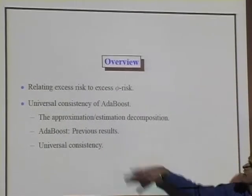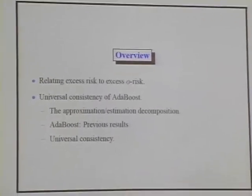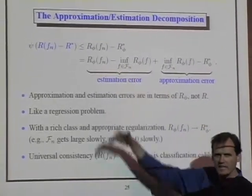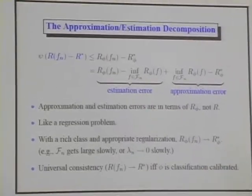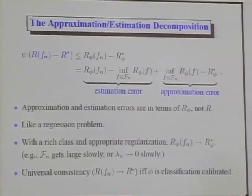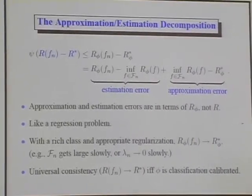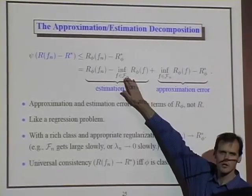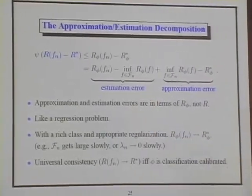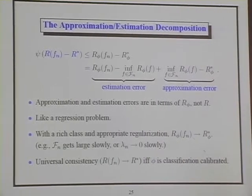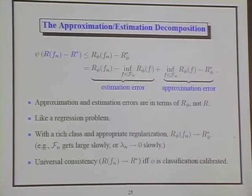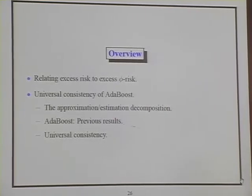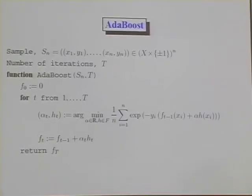For Adaboost, things are more complicated and the difficulty is the estimation error. In the Adaboost case we're working with a space of linear combinations of functions, and there's nothing about the algorithm that keeps us in some small set of functions. In particular, the range of values of the functions is not constrained, so keeping control of the estimation error is difficult.